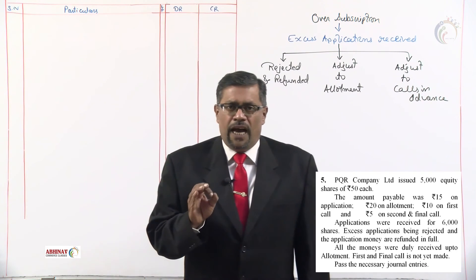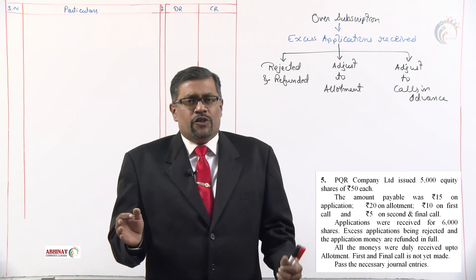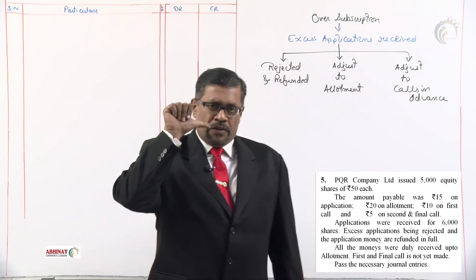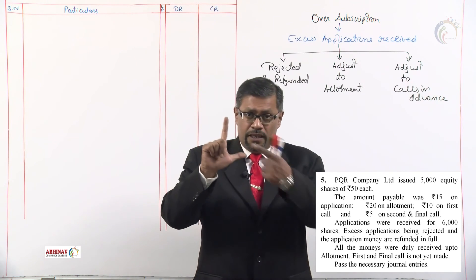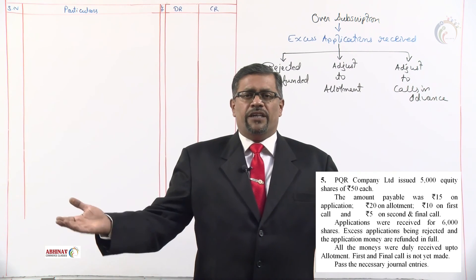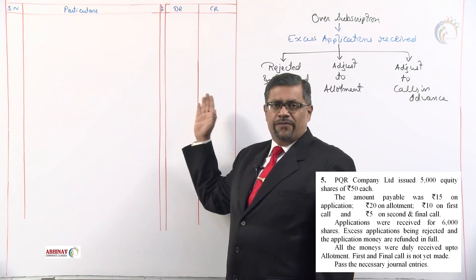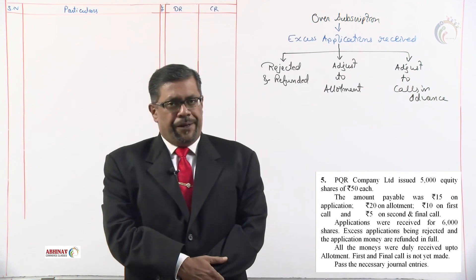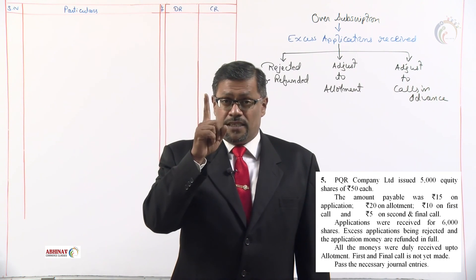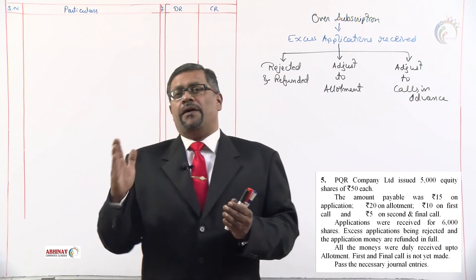The company has not yet made the calls — neither the first call nor the final call. So when calls are not made, we need to pass only four entries: application money received, money transferred after showing the refund entry, allotment money adjusted, and money received. No entries for calls since the company has not yet made them. Let us now see what the first journal entry will be — application money received on 6,000 applications, so 6,000 multiplied by the application amount.